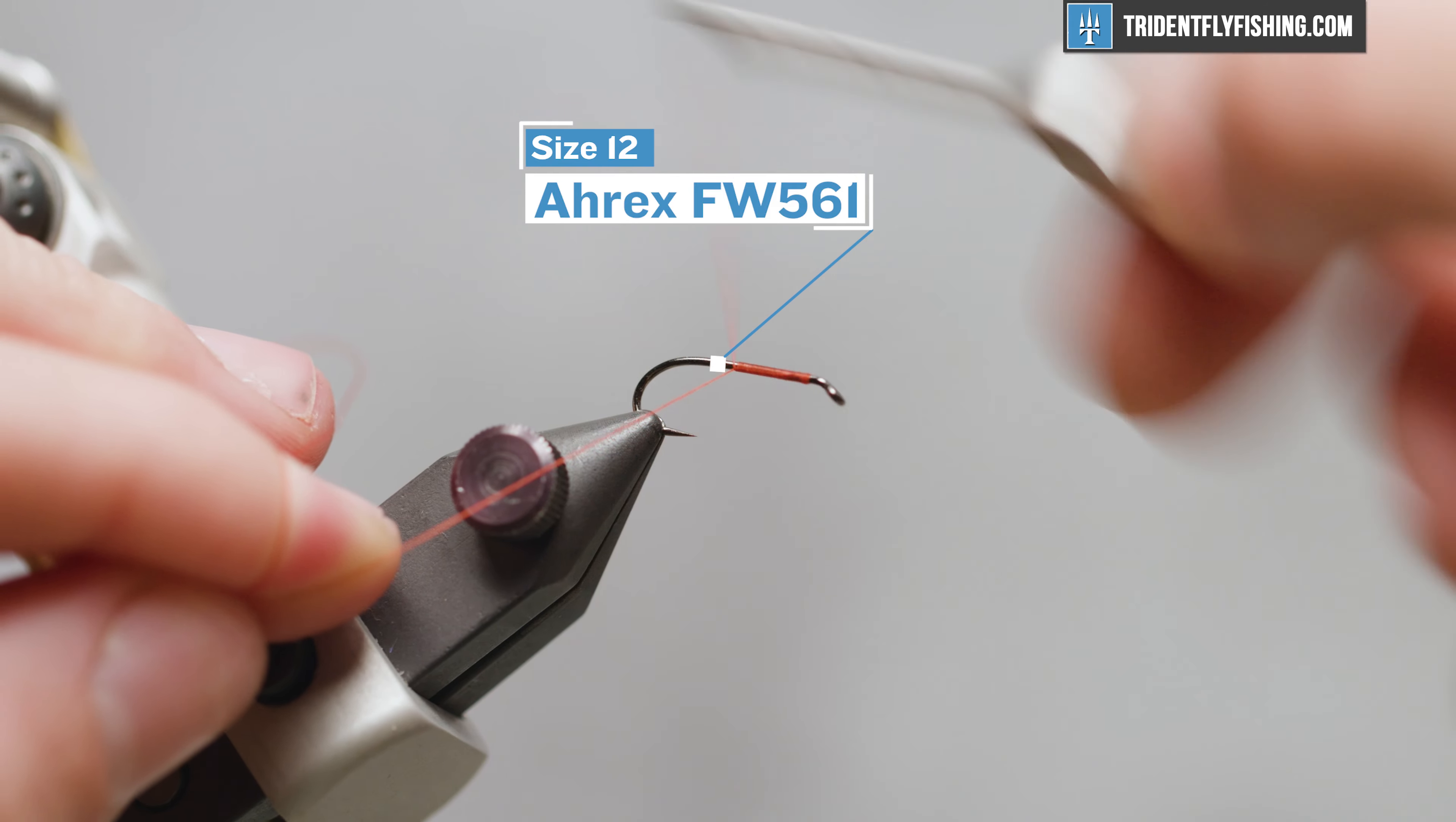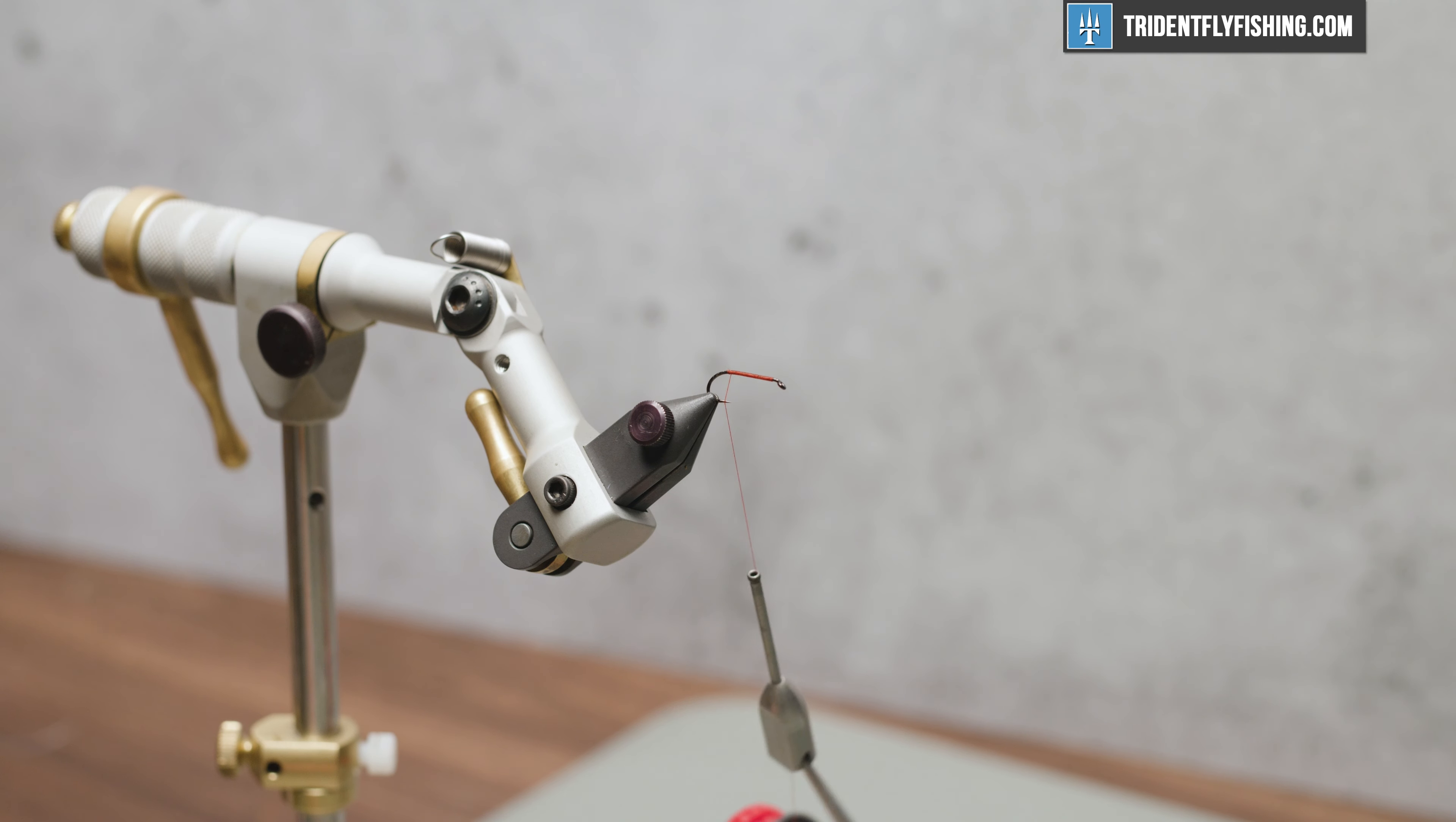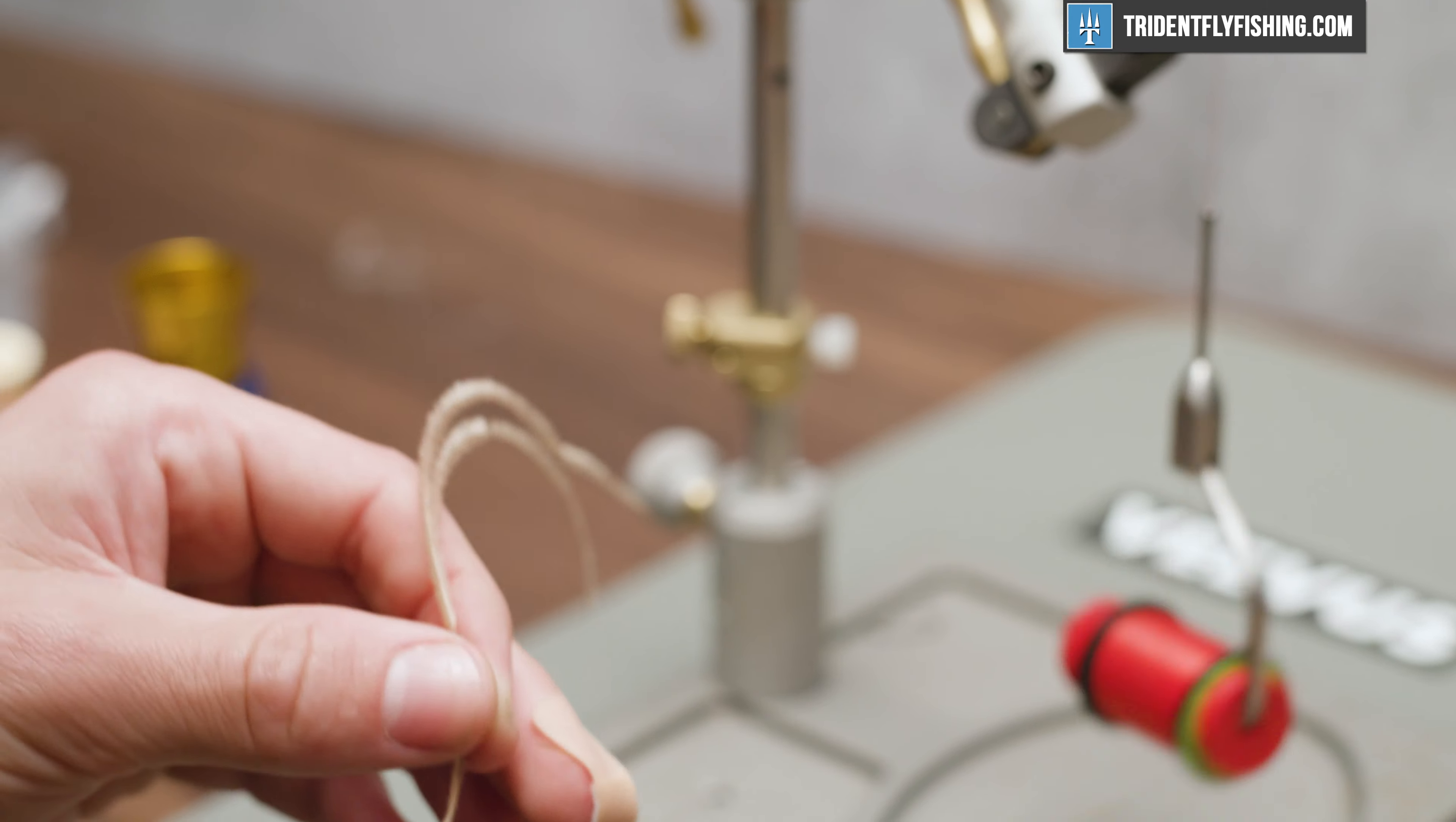We're going to lay down that trademark red thread - it's going to give our head. And we're going to move into some ostrich hurl, color tan. You can tie this fly in gray, white, maybe a light pink or peach, something like that. But I'm going with tan - it'll match most sow bugs and scuds that I encounter.